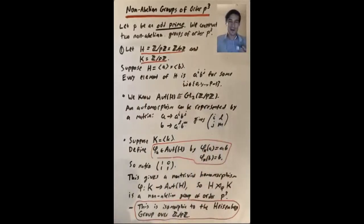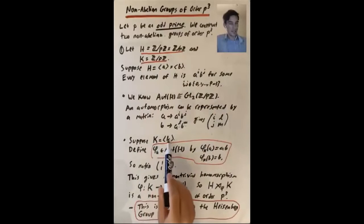So we want to construct this non-abelian group as a semi-direct product. So what do we need? We need a non-trivial homomorphism from K to aut H.